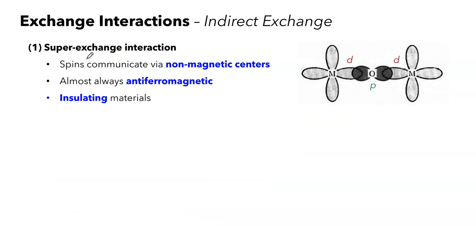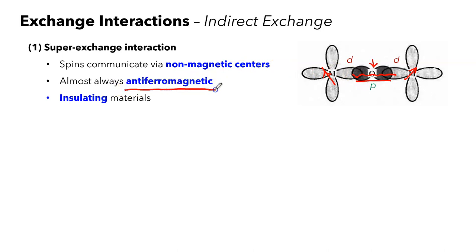If electron orbits of neighboring spins do not directly overlap, spins can still talk to each other via non-magnetic centers — this is known as indirect exchange. There are two different types of indirect exchange. The first type is the super exchange, where spins can communicate through non-magnetic centers. Here, the oxygen plays the role of non-magnetic center, where the p-orbital electrons can play the role of mediators and connect the two neighboring spins. Super exchange interaction is a pervading mechanism in transition metal oxides, which are typically insulating materials, and almost always leads to antiferromagnetic coupling — neighboring spins prefer to be anti-parallel.